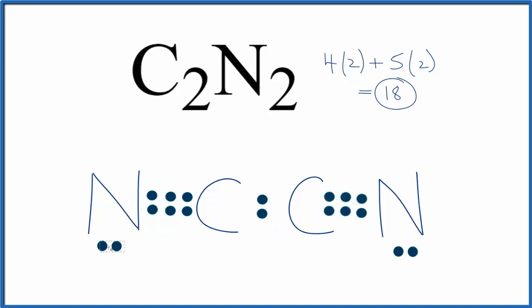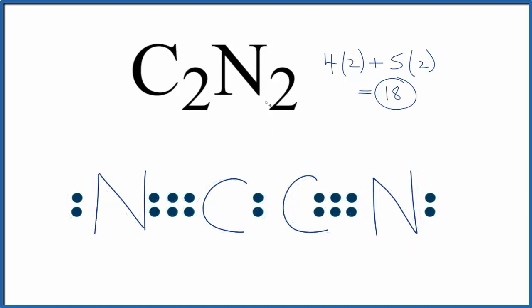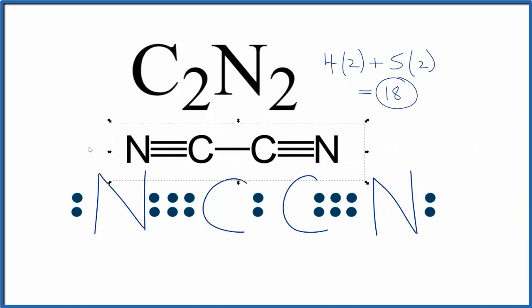I like to move these up here to the side. And this is the Lewis structure for C2N2. All the atoms have octets. We've used the 18 valence electrons. You'll also see it written like this, where each line represents a pair of electrons. Let's put the lone pairs on the end of the nitrogen. That looks better.